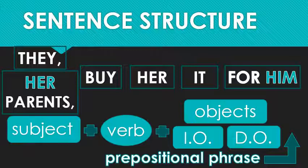'They buy her it for him.' We don't normally write sentences with only pronouns because it can get a little weird. But you can see 'they' is the subject. 'Her parents' — notice the commas indicate that part is extra information, not an extra subject. So they, her parents, buy her — that's the indirect object, because the order is indirect object, direct object. 'It for him' — 'him' is the object of the preposition.